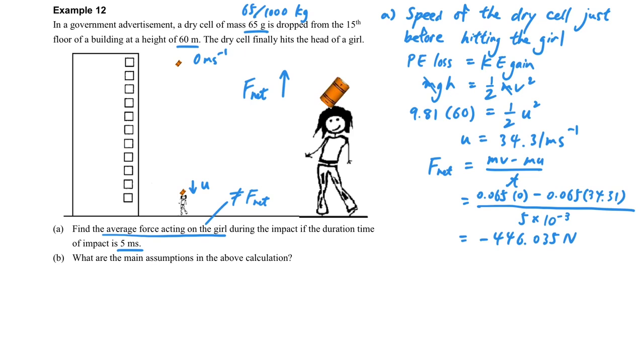So why is the average force acting on the girl not equal to this F net? When we're doing the calculation, this F net is referred to the dry cell, because we substitute the mass of the dry cell and the speed of the dry cell. So the force is also related to the dry cell.